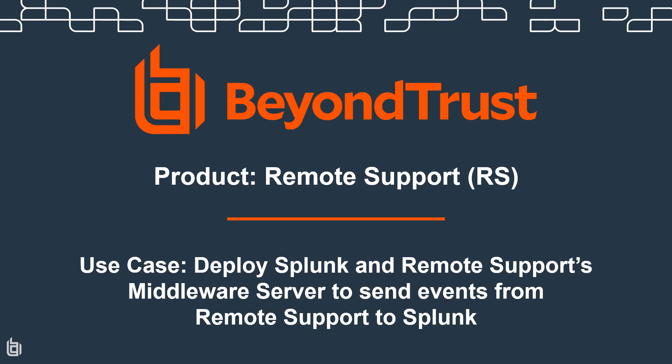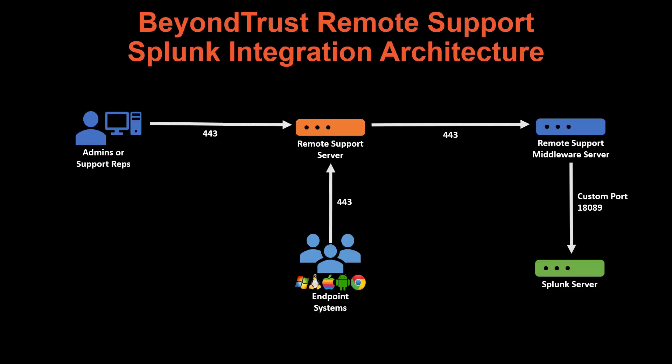In this video, we're going to cover BeyondTrust's Remote Support product and how it supports Splunk integration using Remote Support's middleware server, sending events from Remote Support to Splunk. Here's what it looks like from an architecture perspective. You have your admins or your support reps logging into the Remote Support server over 443. Your endpoint systems send events up to the Remote Support server outbound 443. The Remote Support server then sends events to the Remote Support middleware server over 443, and then we have a custom port defined within Splunk that's receiving those events from that middleware server.